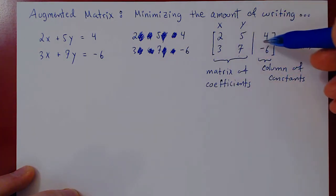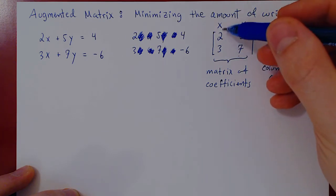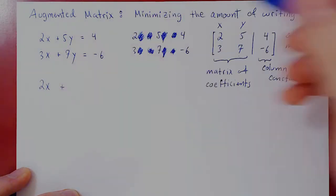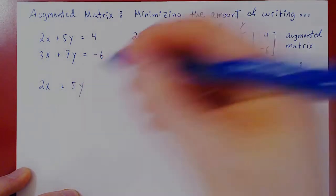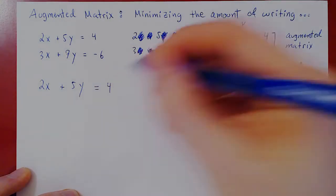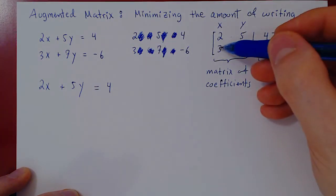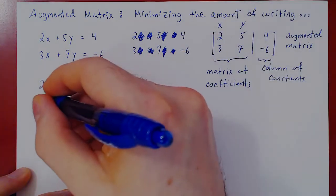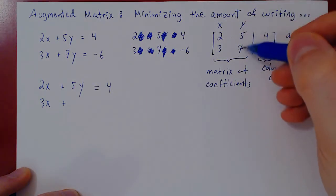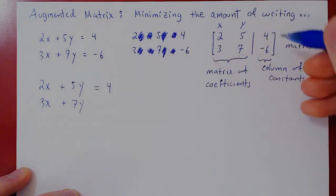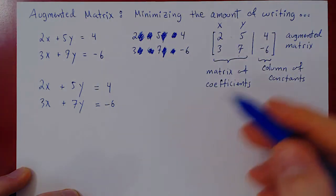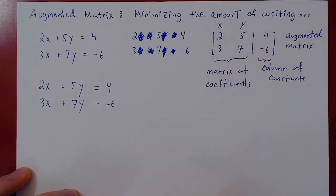We could also go backwards — from the augmented matrix back to the linear system. The first row gives us 2x plus 5y equals 4, where the space represents a plus and the vertical bar represents an equal sign. The second row gives us 3x plus 7y equals negative 6. That is how you construct and interpret the augmented matrix of a linear system.